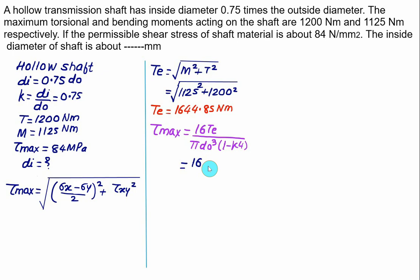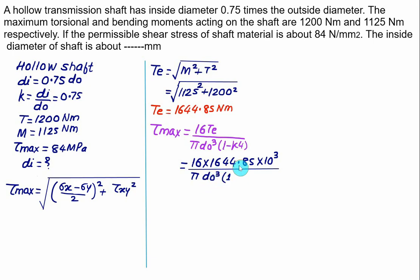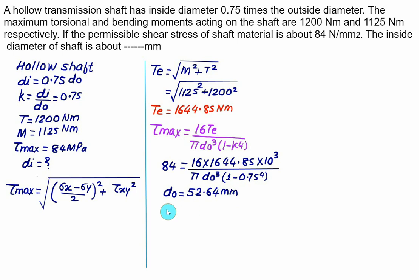Solving this gives the outside diameter Do equals 52.64 mm. Since inside diameter Di equals 0.75 times the outside diameter, we calculate Di equals 0.75 times 52.64, which equals 39.5 mm.